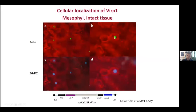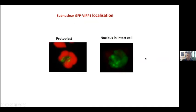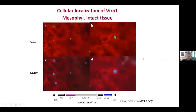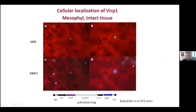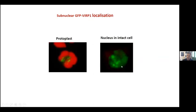VIRP1 is localized in the nucleus — we fused it to GFP and it goes into the nucleus. In fact, it goes to specific foci, as you can see here. This is a magnification from tissue images, and you can see these foci are in specific regions of the nucleus, not distributed everywhere as a diffuse state would be. From the protoplast image, it is clearly going to the nucleus and only to the nucleus.